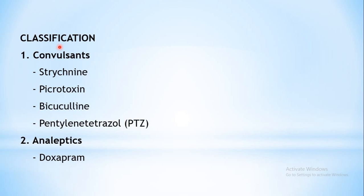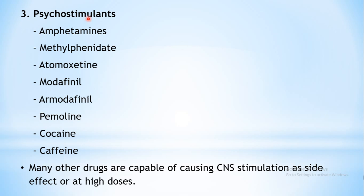Coming to the classification, these are mainly divided into three classes. The first is convulsants — examples include strychnine, picrotoxin, bicuculine, and pentylenetetrazole, abbreviated PTZ. The second class is analeptics or respiratory stimulants — example is doxapram. The third class is psychostimulants — examples include amphetamines, methylphenidate, atomoxetine, modafinil, armodafinil, pemoline, cocaine, and caffeine.